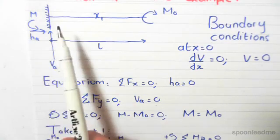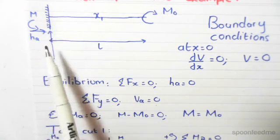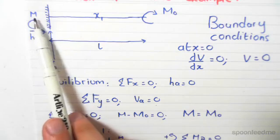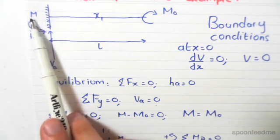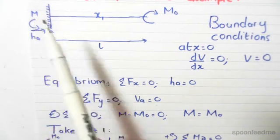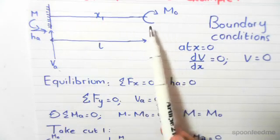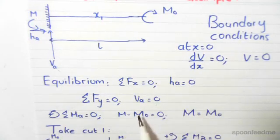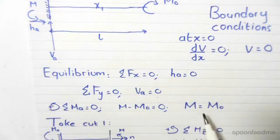Sum of moments about A, which is this point here, is equal to 0. So we can work out the unknown moment M. We have M minus MO, because it's a clockwise moment. So M minus MO equals 0. This gives us M equals MO.